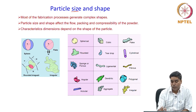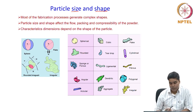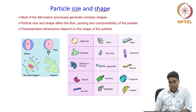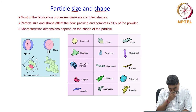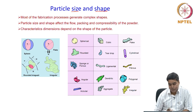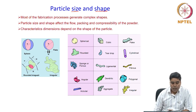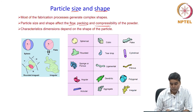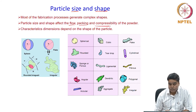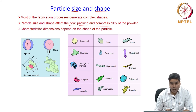When evaluating particle characteristics, size and shape are the two main characteristics we are looking for, because they have a great bearing on the compression process. Most fabrication processes generate complex shapes, and particle size and shape will affect the flow, packing, and compressibility of the powder. This is very important as far as the compaction process is concerned, wherein the powder has to be filled in a die, packed, and then compressed.